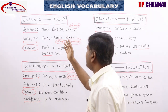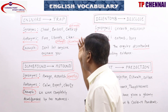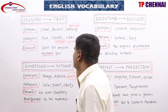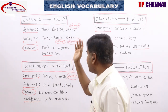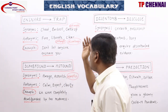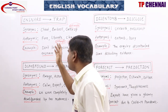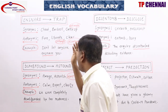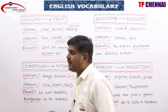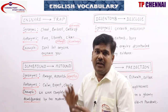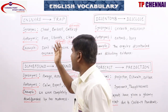First one — ensnare. It means trap: to trap someone in an unpleasant or illegal situation, or to catch or get control of something or someone, or to catch an animal in a trap. All these meanings we can relate to ensnare.